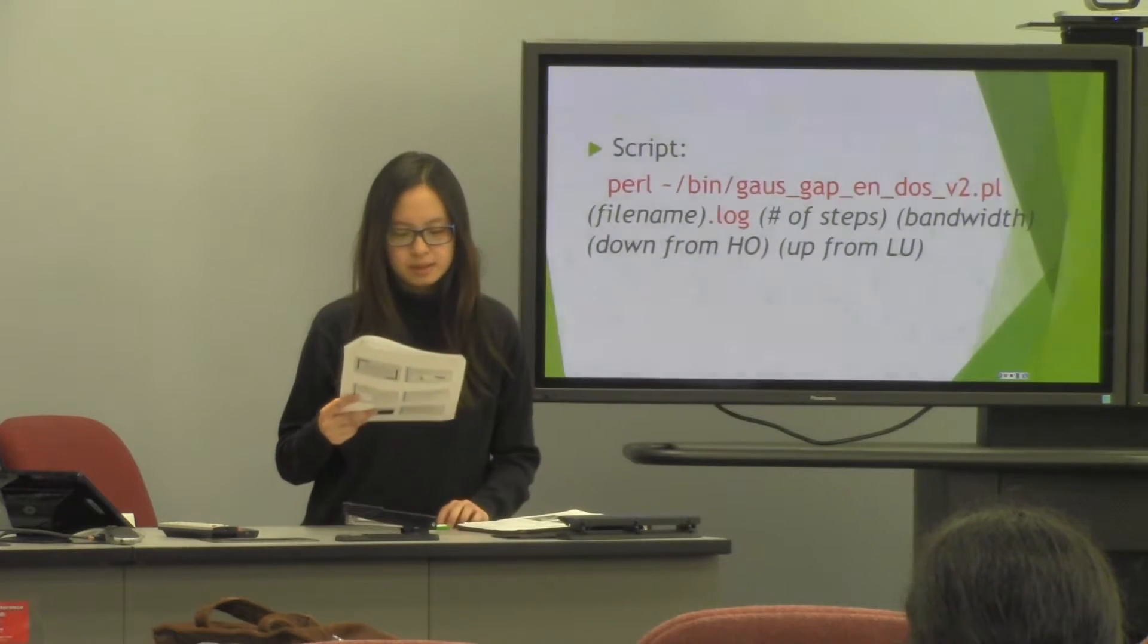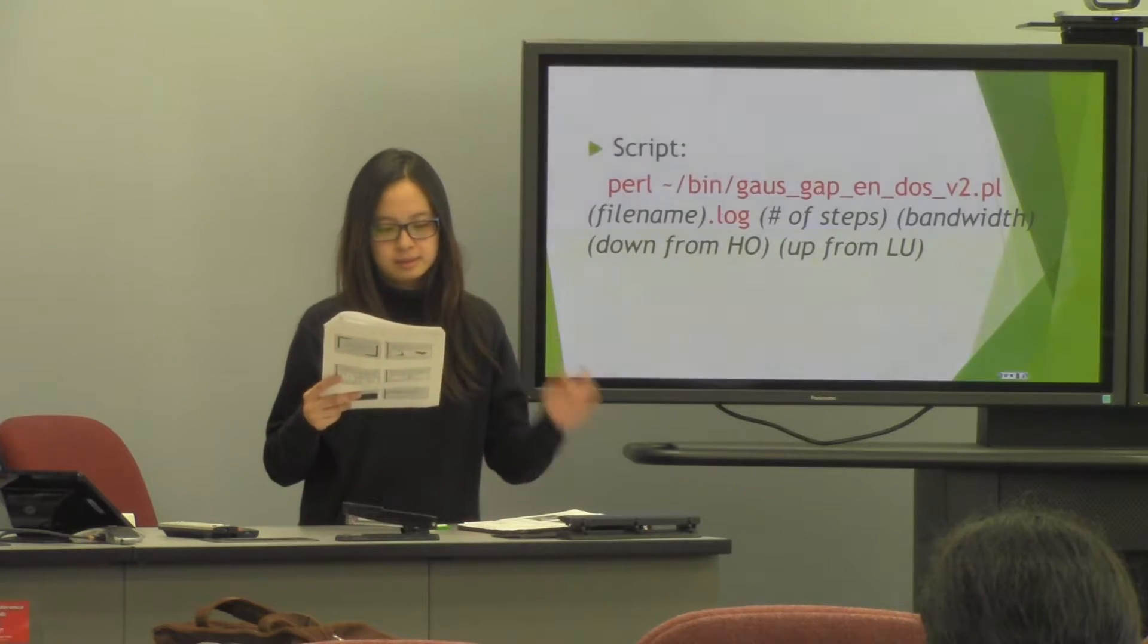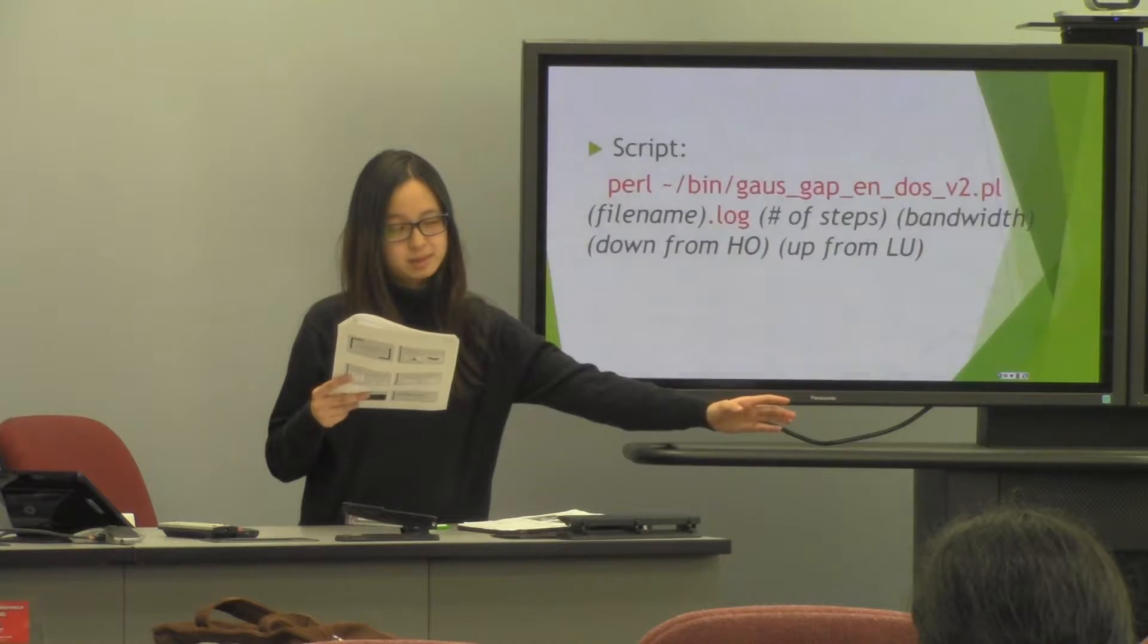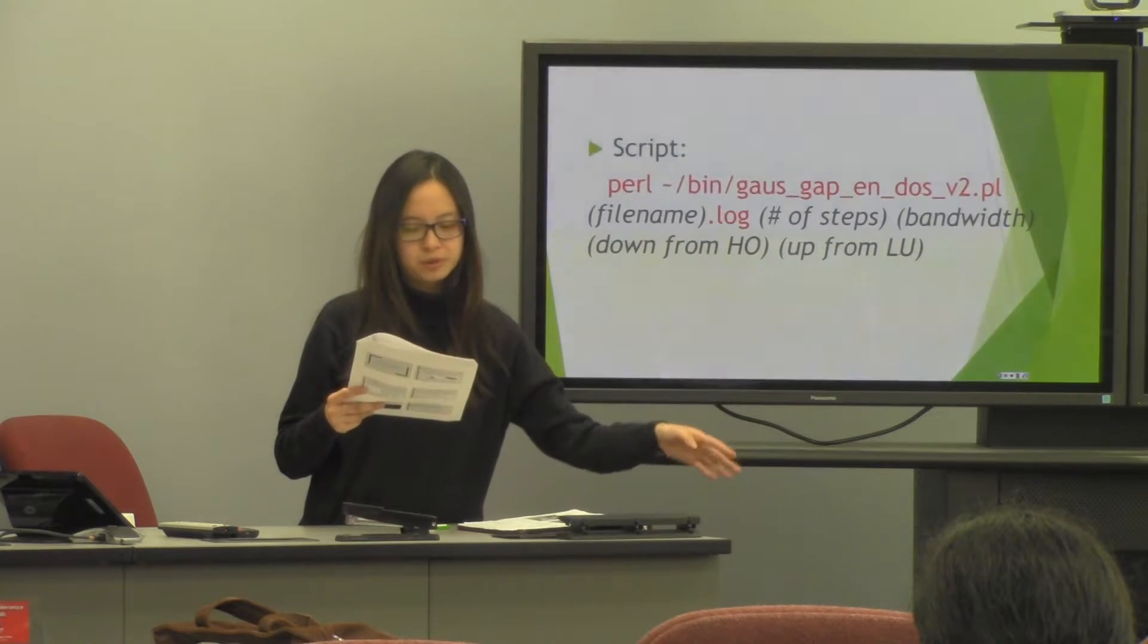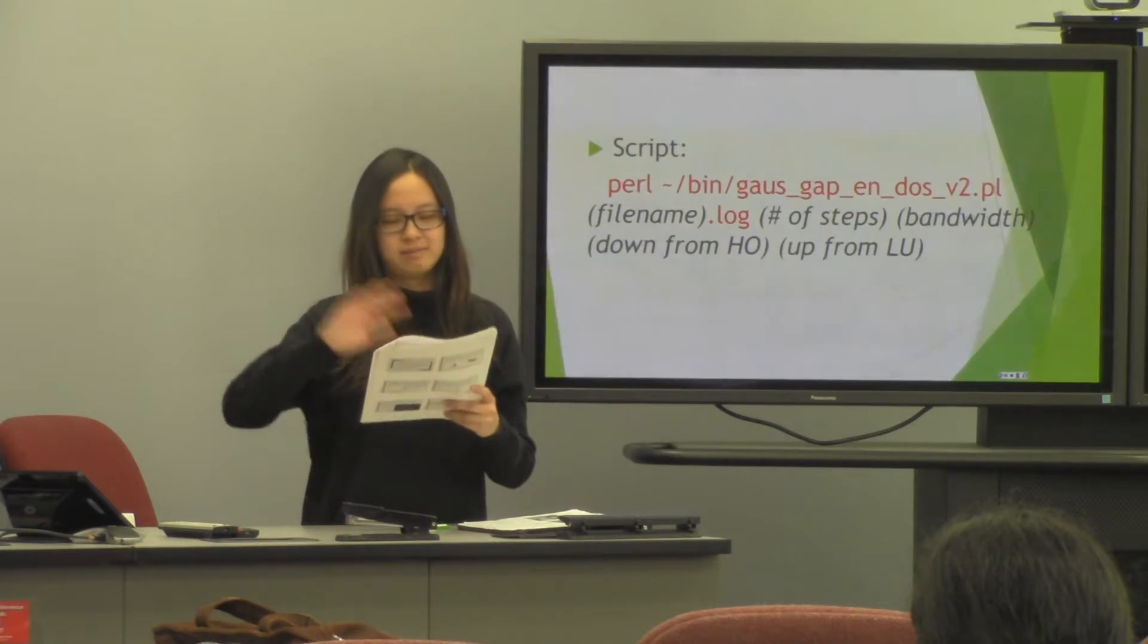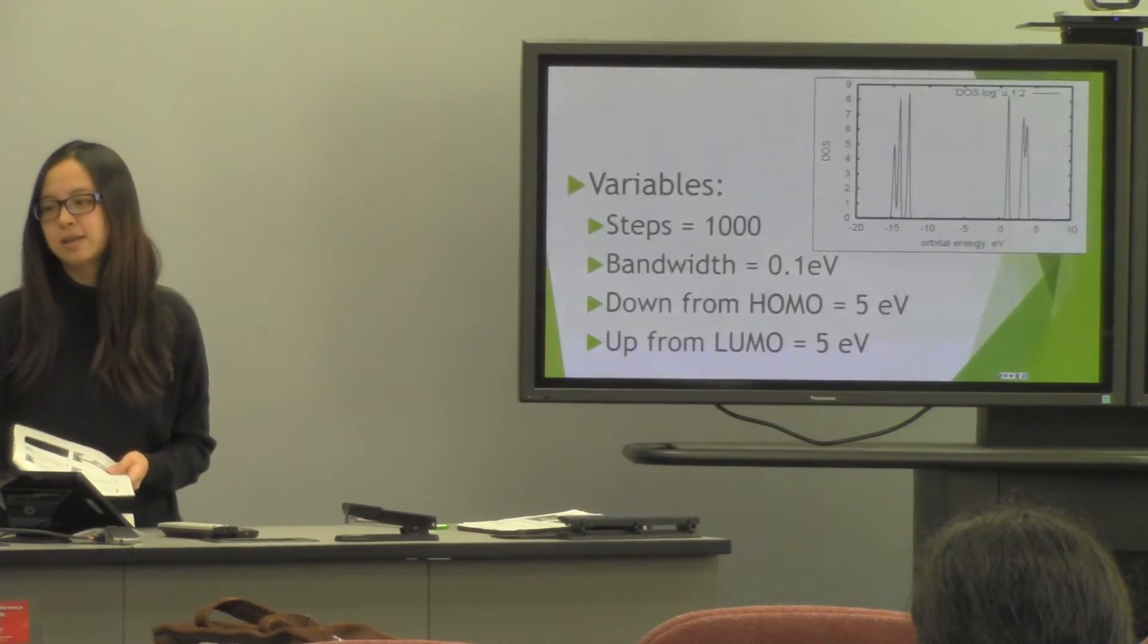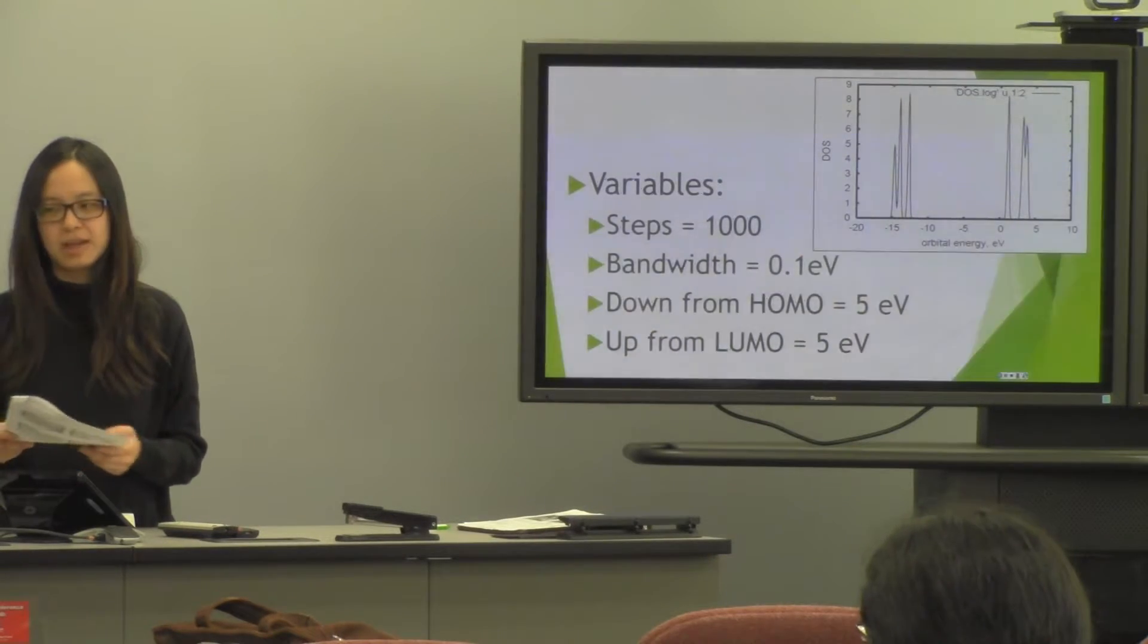Output file name, and then you put your number of steps. The bandwidth is how many electron volts down from the HOMO and how many electron volts up from the HOMO. So these are the variables that you can use. Usually steps in calculations I use 1000.